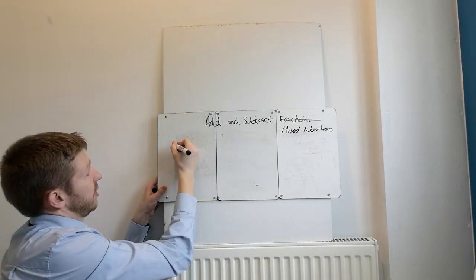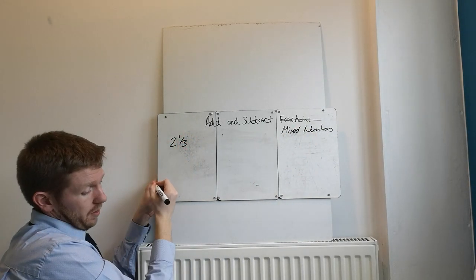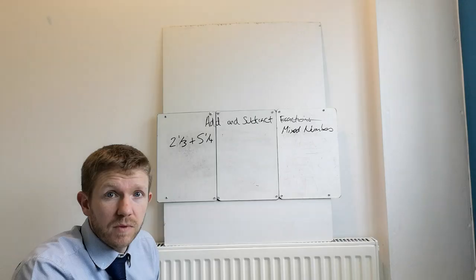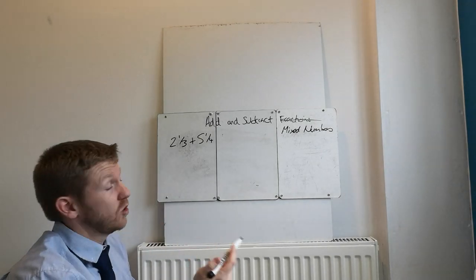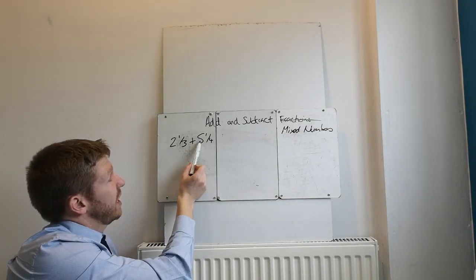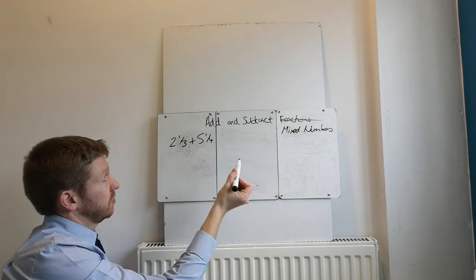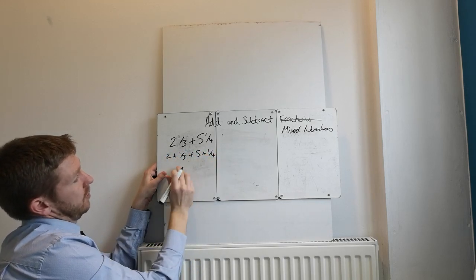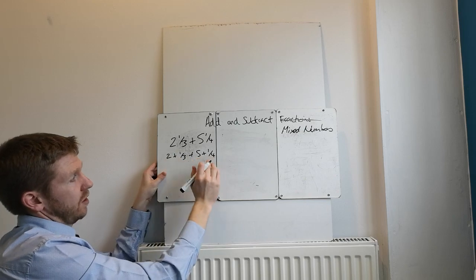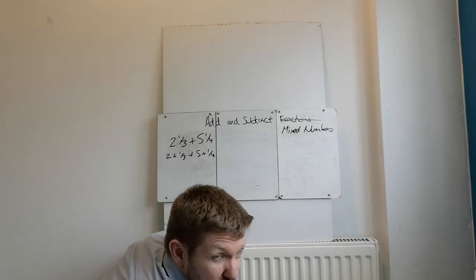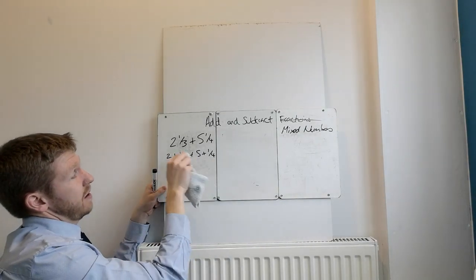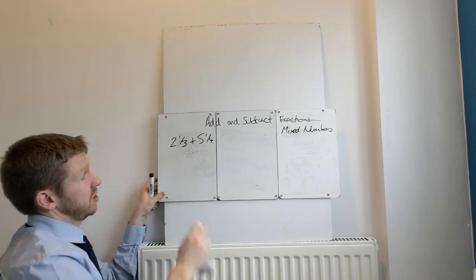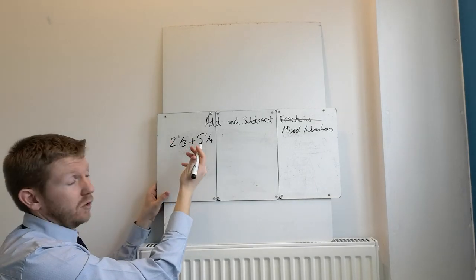So mixed numbers. Adding and subtracting mixed numbers. So let's say you had something like 2 and 1 third plus 5 and 1 quarter. So the first thing you do here is, as it's adding, you could actually add the 2 and the 5 and you could also then add the 2 fractions. But I prefer to teach that you do the same method for adding as you would for subtracting.